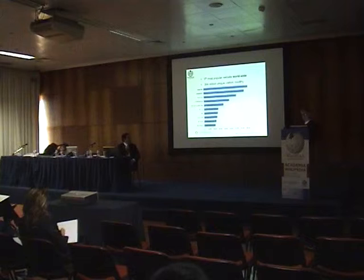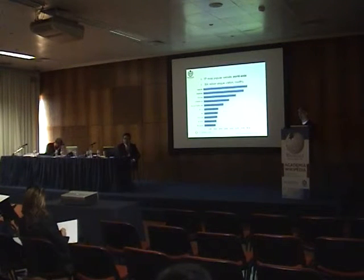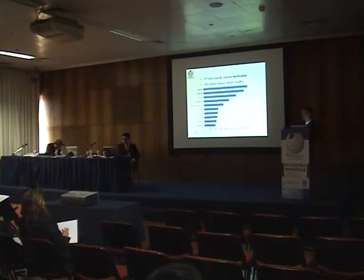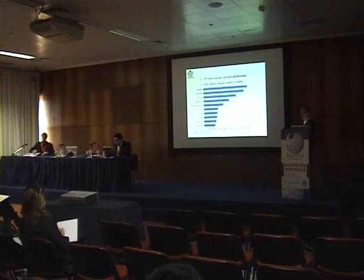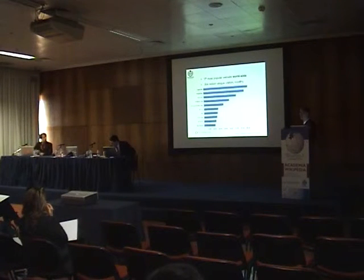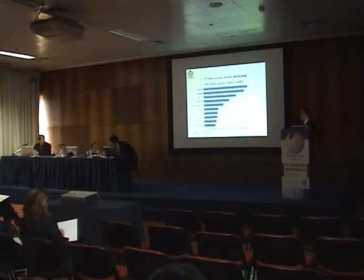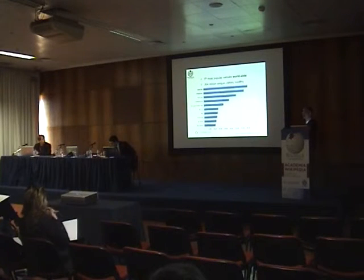Wikipedia and the sister projects as a website rank number five worldwide. You can see all the other usual suspects — Google, Microsoft, Yahoo, and Facebook are the only websites that are bigger than us. And you have to think about the fact that all we do is information. All these other sites at the top offer email, e-commerce, and other services. We are all about information. And if you look at the other sites, we're the only one that's a non-profit.